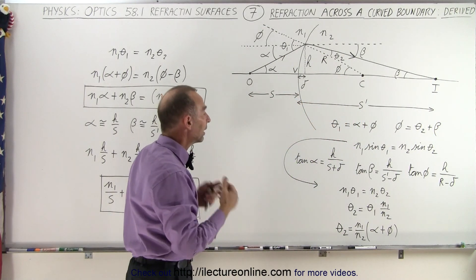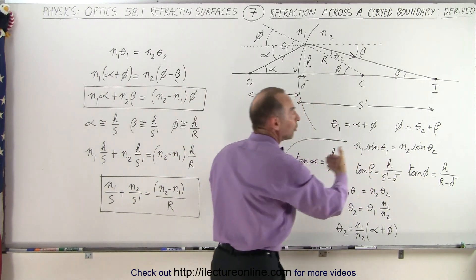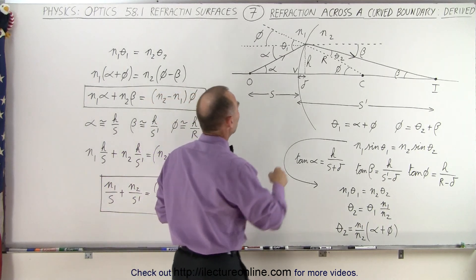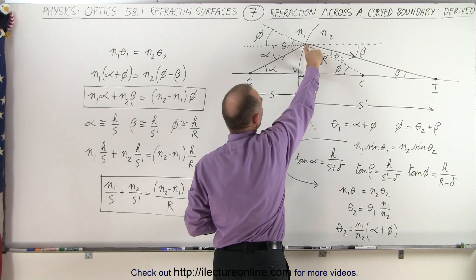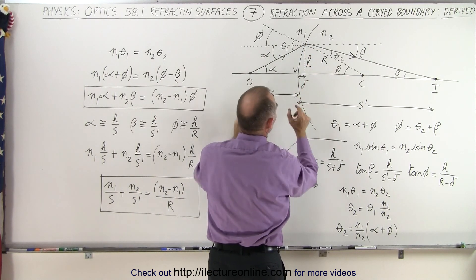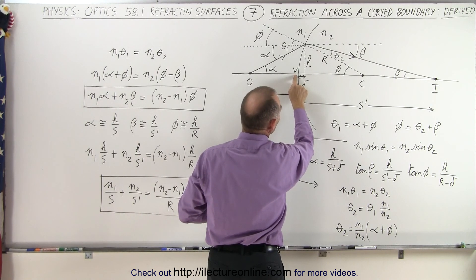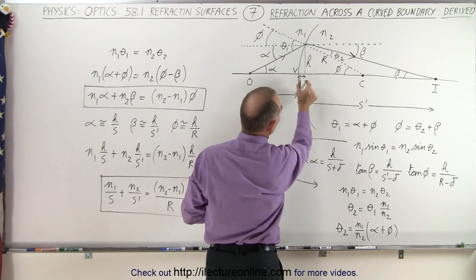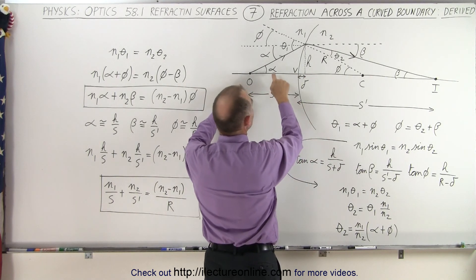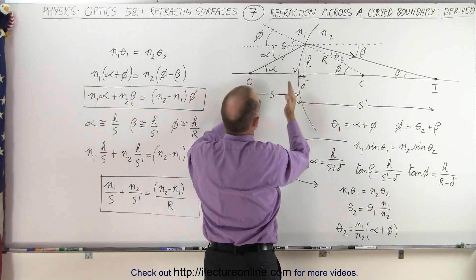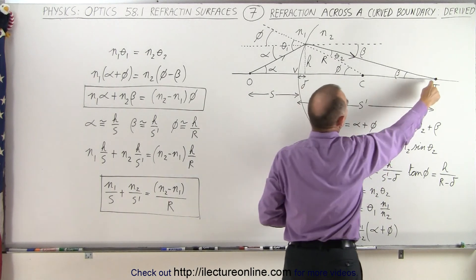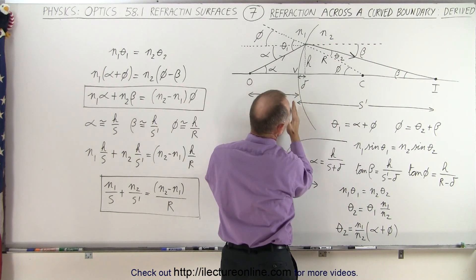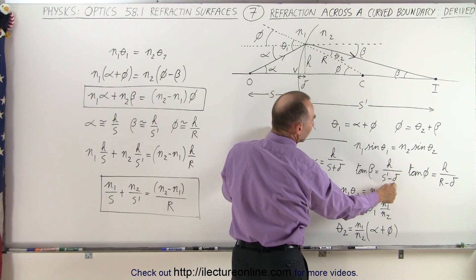Now we relate alpha, beta, and phi to their physical construction using the tangent. The tangent of alpha equals h divided by s plus delta, where delta is the small horizontal difference between the vertex and the point directly below where the ray hits the boundary. The tangent of beta equals h divided by s prime minus delta. And the tangent of phi equals h divided by r minus delta.